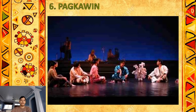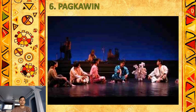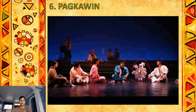Number six is Pagkawin, the wedding ceremony dance. The festivity opens with the Pahanda, or presentation of the dowry. Relatives of the groom present to the relatives of the bride traditional dowries that usually include what they call salappa — a brass box containing money — jewelry, other valuables, and the important betel nut.